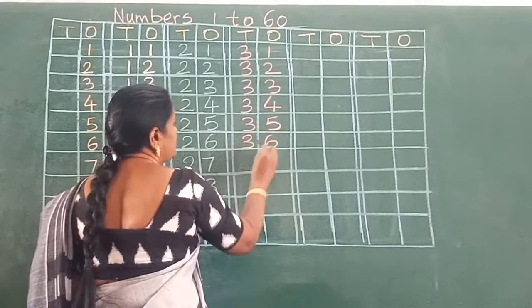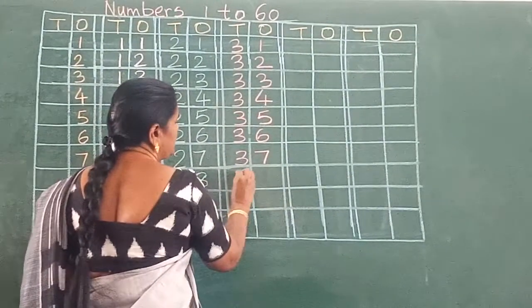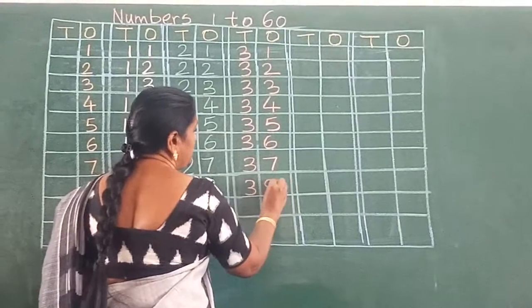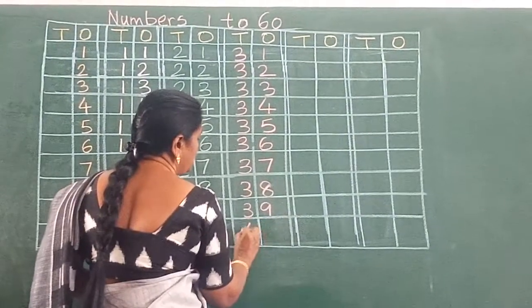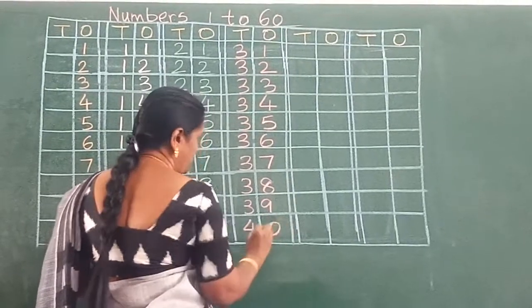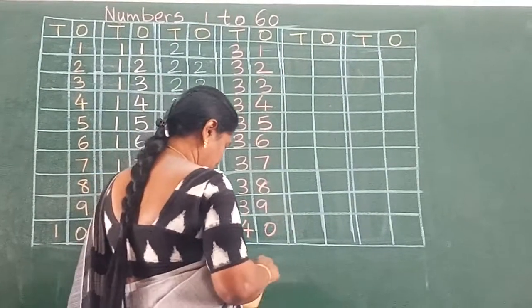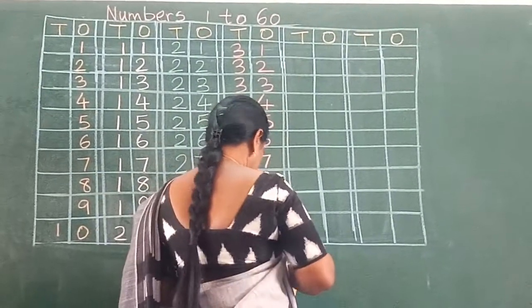3, 6, 36. 3, 7, 37. 3, 8, 38. 3, 9, 39. 4, 0, 40. Now after 40, we will go back to the next number.